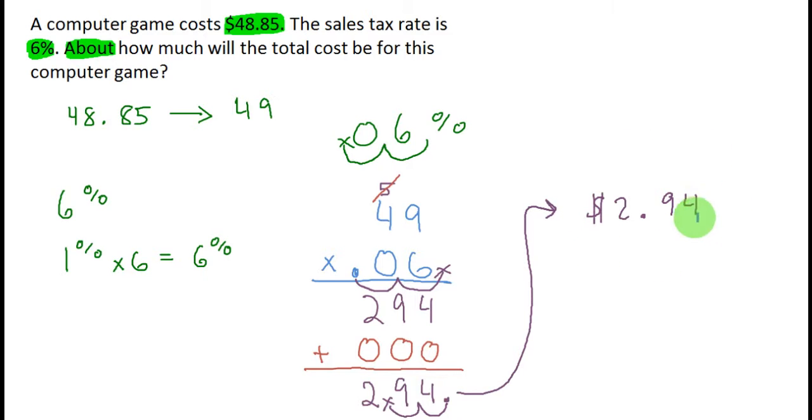So is this the answer to the problem? Let's go back and check and make sure we understand what the problem is asking. It's saying how much will the total cost be for this computer game? Well, the total cost is $48.85 plus the amount of tax. So we've got to take $48.85, the total cost, and add it to $2.94. But we estimated $48.85 to $49.